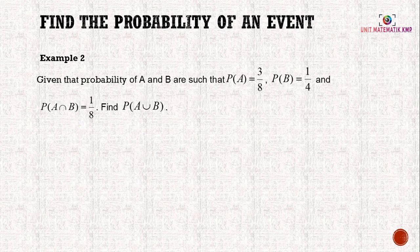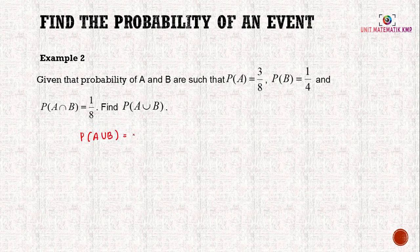Example 2: Given P(A) = 3/8, P(B) = 1/4, and P(A∩B) = 1/8. Find the probability of A∪B. Since the question doesn't mention mutually exclusive, we use the addition probability rule: P(A∪B) = P(A) + P(B) - P(A∩B).